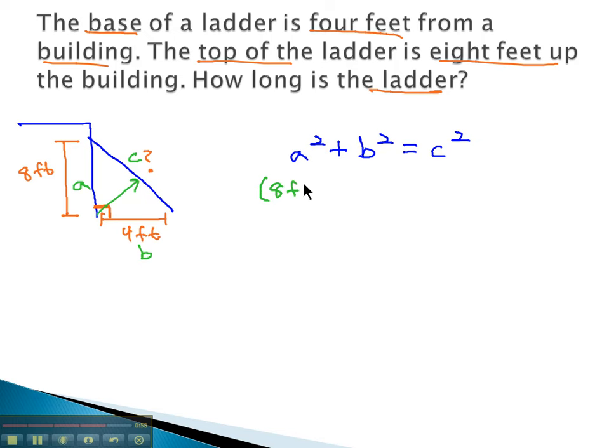So a, we're going to use 8 feet squared, plus b is 4 feet squared, equals c, that's what we're looking for, squared. Order of operations, doing the exponents first. 8 squared is 64 square feet, plus 4 squared is 16 square feet, equals c squared.